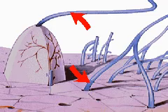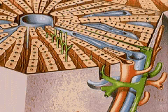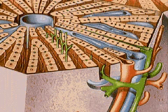The liver receives blood from two sources. Eighty percent, which carries digested food materials, arrives from the intestine via the portal vein and venules. The remaining 20 percent is oxygenated blood from the heart, which enters through the hepatic artery and arterioles.